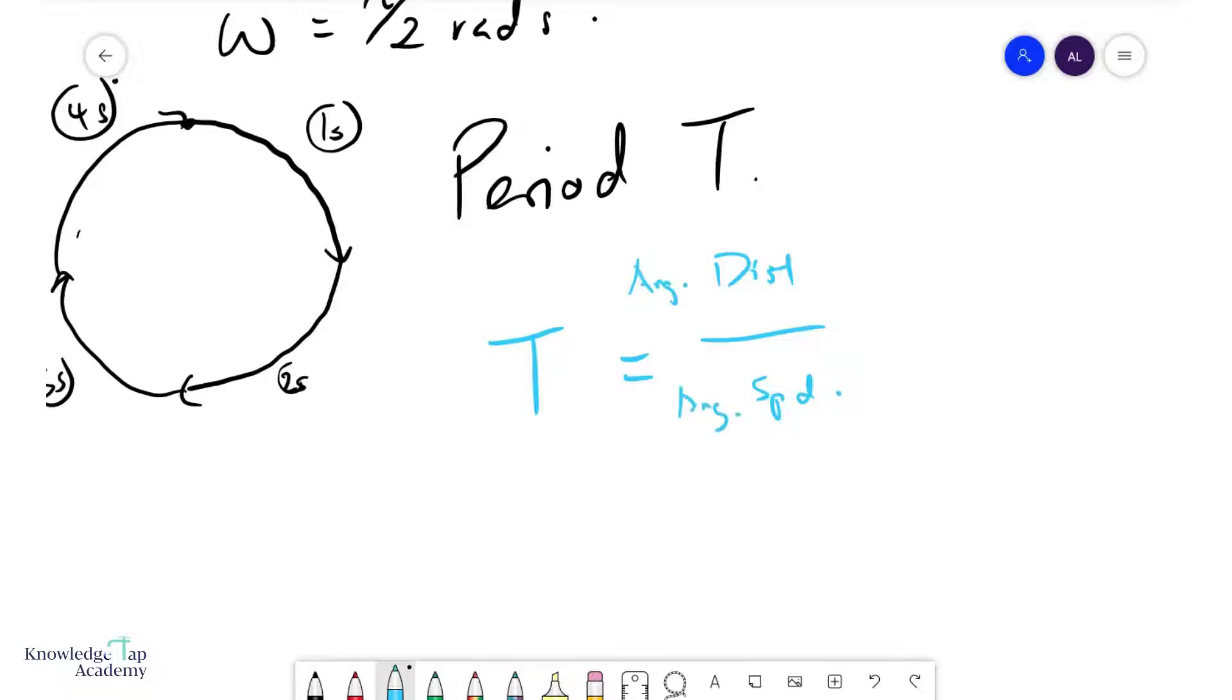And so if I think about that again, let's say I want to consider the motion of one circle or an object moving in a complete circular path, then the average angular distance it travels, of course, will be 2π radians. And the speed is just given by omega.